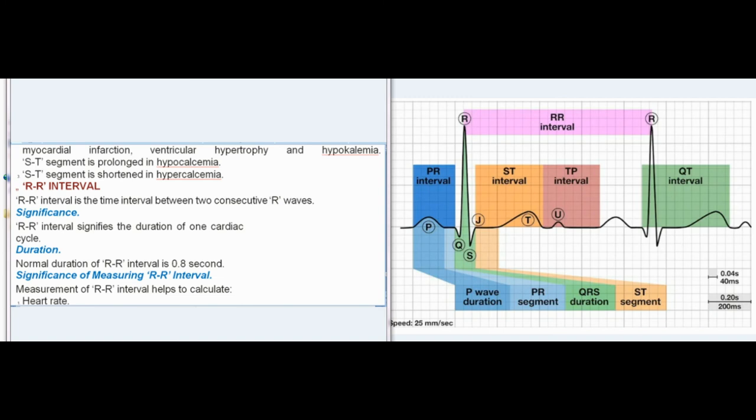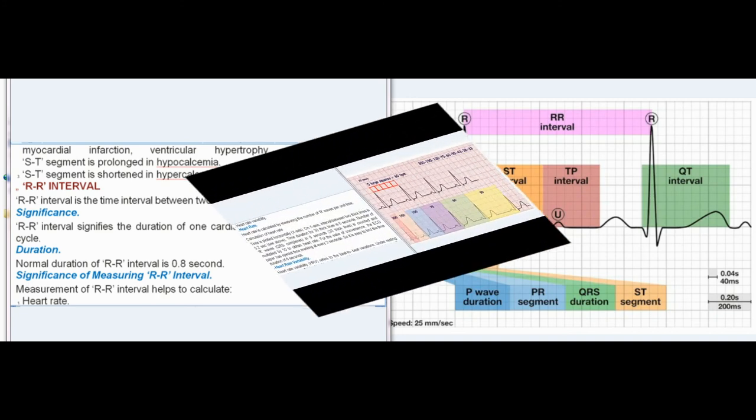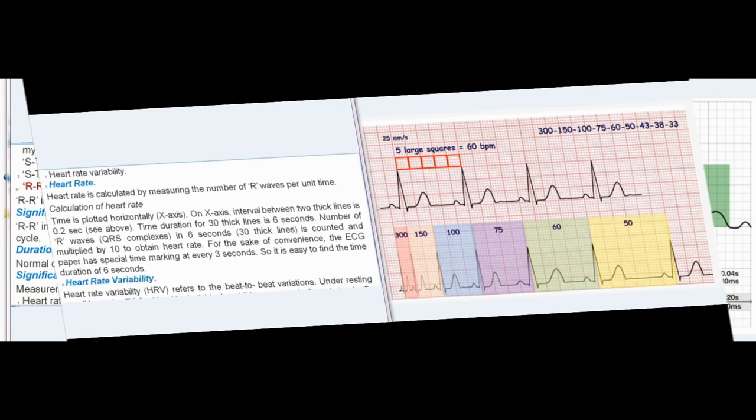R-R Interval: R-R interval is the time interval between two consecutive R-waves. It signifies the duration of one cardiac cycle. Normal duration of R-R interval is 0.8 second. Measurement of R-R interval helps to calculate heart rate and heart rate variability.